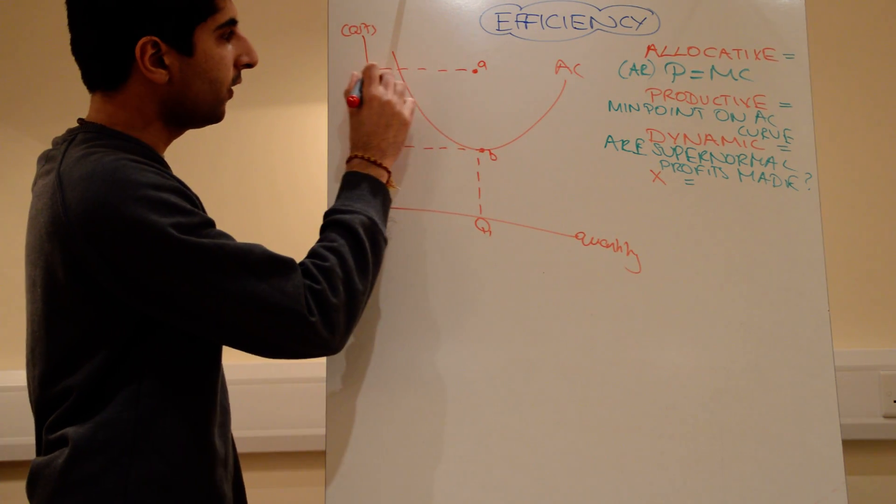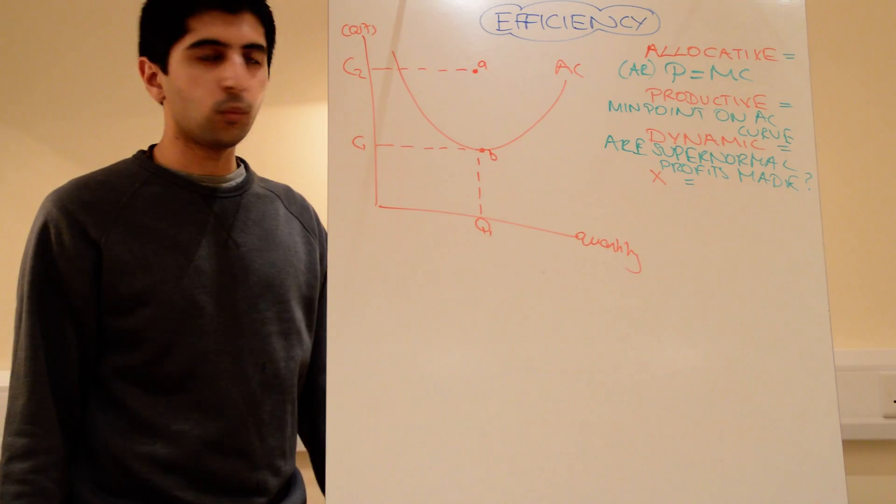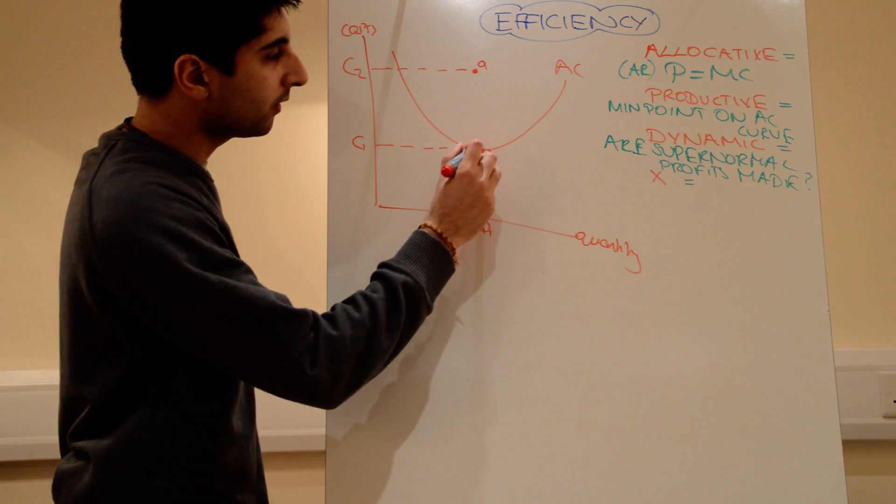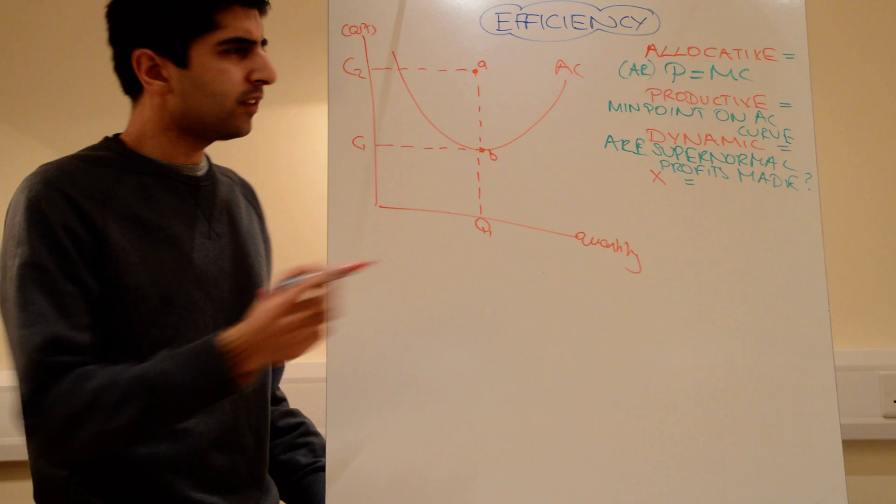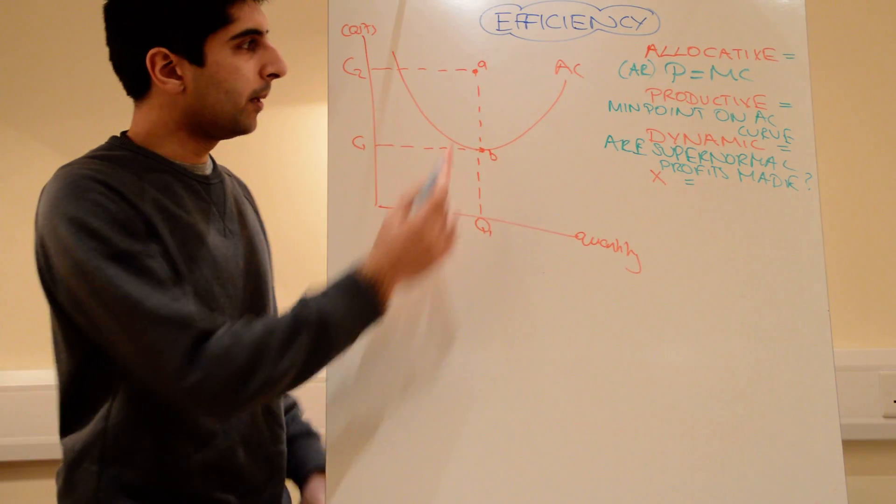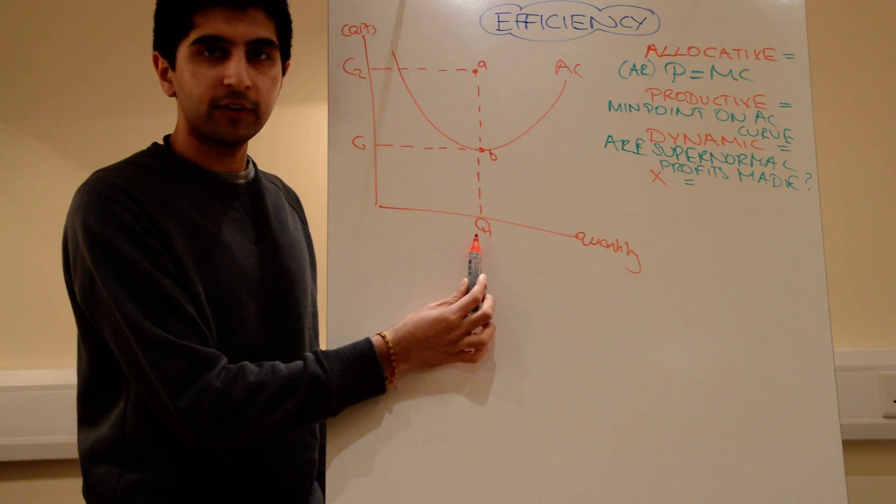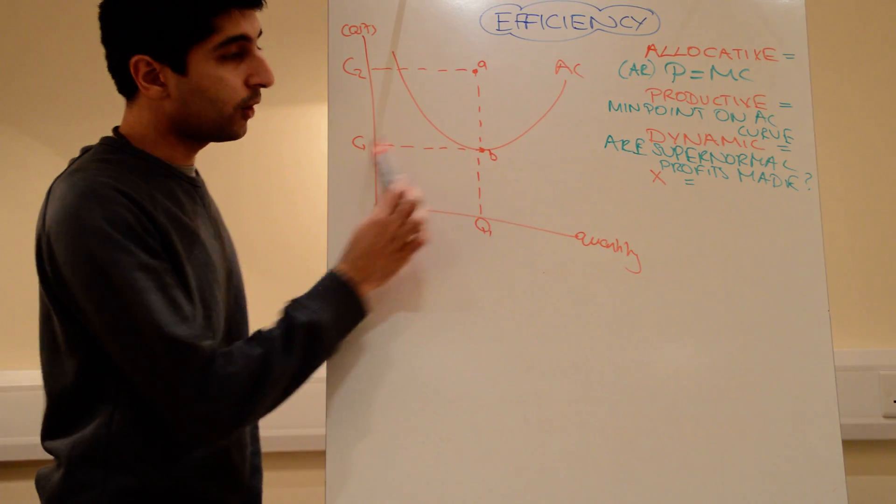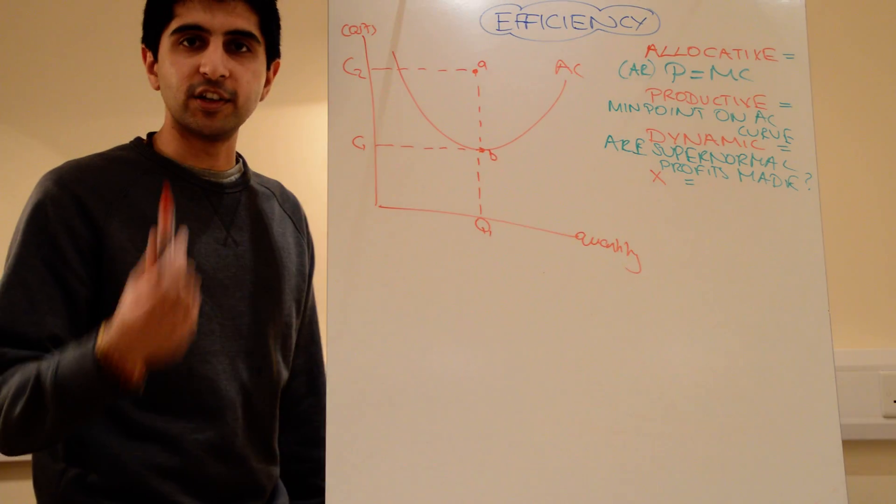At point A, look at the level of cost. Costs are way up there. They're at C2. But why is the firm doing that? It's being wasteful. Because it could produce a same amount of quantity at point B. But at doing so, the cost will be much lower. In that sense, they're being efficient.